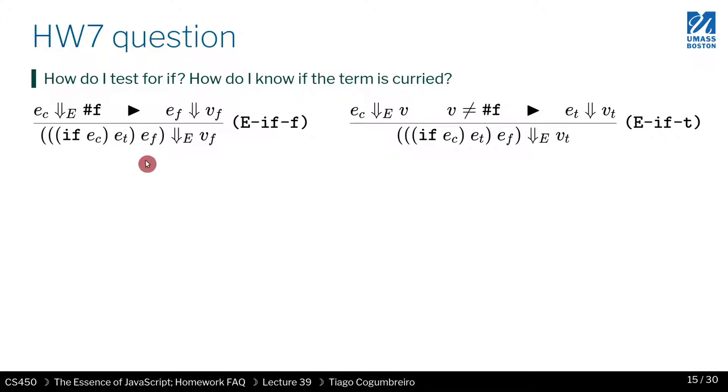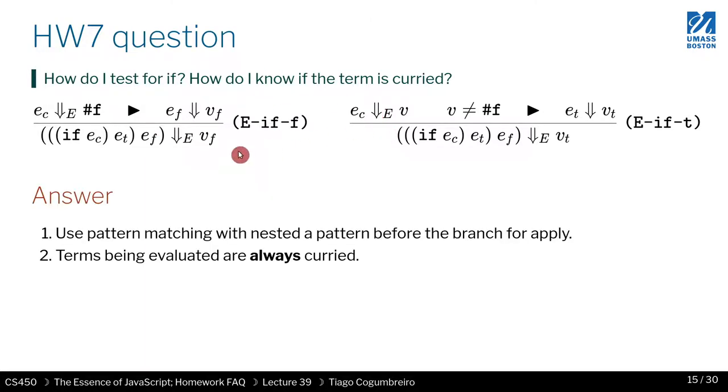Another question you may be wondering is how do I implement these two rules? This is the if condition, so the conditional in racket. First thing you should know, if you're wondering if the term is curried or not, the term is always curried. The part in the homework where you're asked to implement currying, that's evaluated separately from the function evaluation which always assumes that all functions take exactly one argument and one parameter.